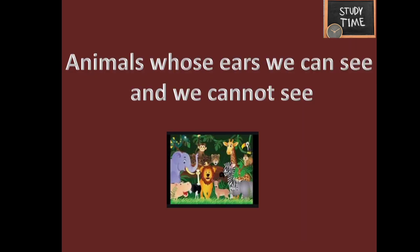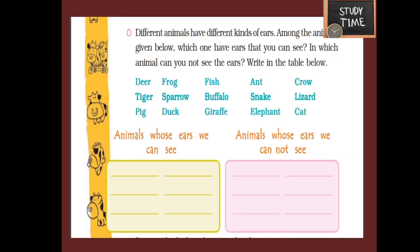Next, we are going to see animals whose ears can be seen and animals whose ears cannot be seen. Different animals have different kinds of ears — among those animals, which ones have ears that you can see, and in which animals can you not see the ears?